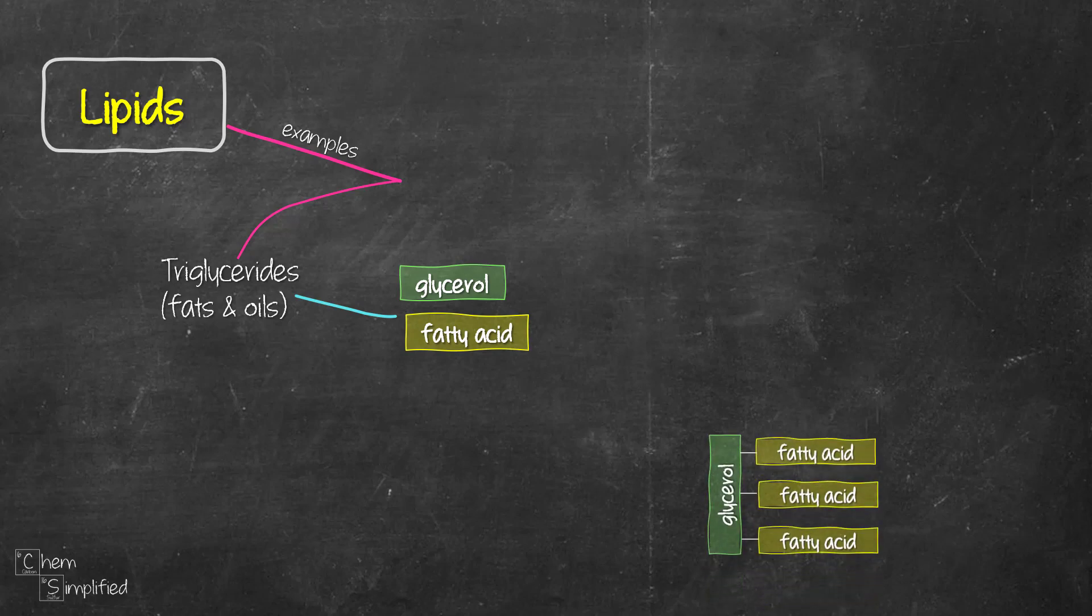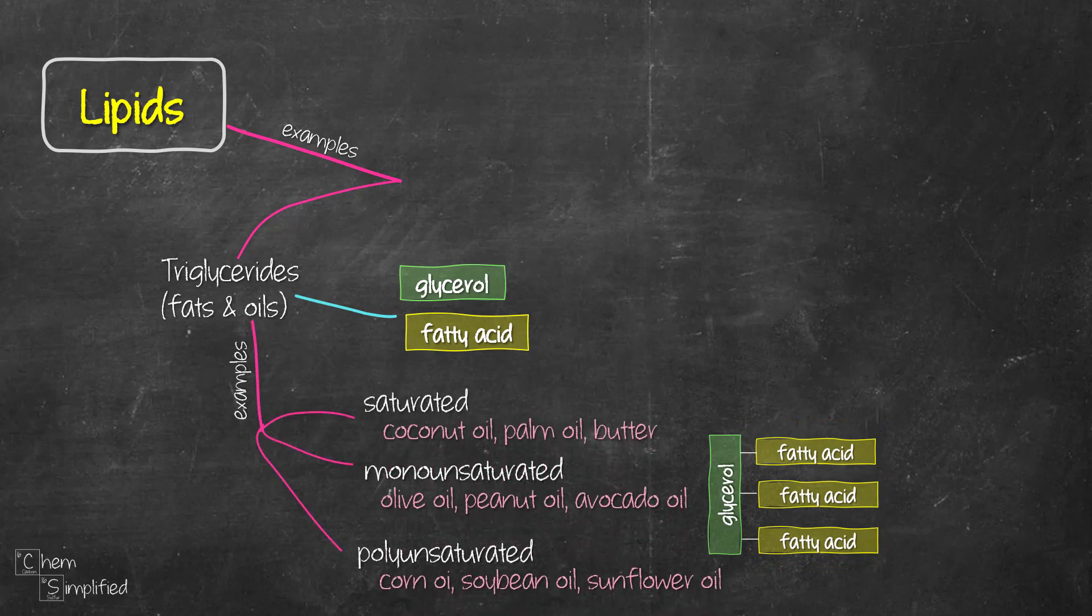The glycerol and fatty acids get together through ester linkages to form triglycerides. As the name suggests, tri refers to three, and that's why we have three fatty acids in the structure. We can classify triglycerides as saturated, monounsaturated, or polyunsaturated depending on the type of fatty acids that are present in the structure.